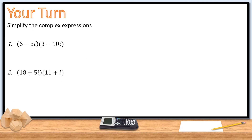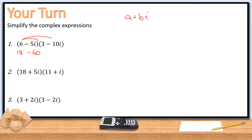Practice problems — distribute, simplify, and bring it down to the form a plus bi. For (6 minus 10i)(3 minus 5i): 6×3 is 18, 6×(minus 5i) is minus 30i, minus 10i×3 is minus 15i... wait, that gives minus 60i and minus 15i, and plus 50i². 18 minus 75i, and 50×(minus 1) is minus 50. So 18 minus 50 is minus 32... final answer 68 minus 75i. For the second: 18×11 is 198, plus 18i plus 55i plus 5i². Since i² is minus 1, that's minus 5. So 198 minus 5 is 193, and 18 plus 55 is 73i. Answer: 193 plus 73i.